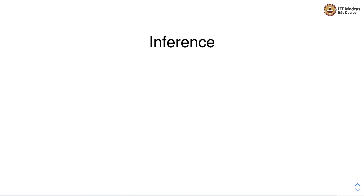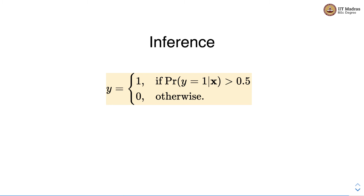Let's look at how to perform inference in logistic regression. Logistic regression essentially returns the probability that an example belongs to class one. If this probability is greater than 0.5, we assign class one to the label; otherwise we assign class zero. This threshold of 0.5 can be adjusted, and typically this is done in a cross-validation manner suitable for the given problem at hand.